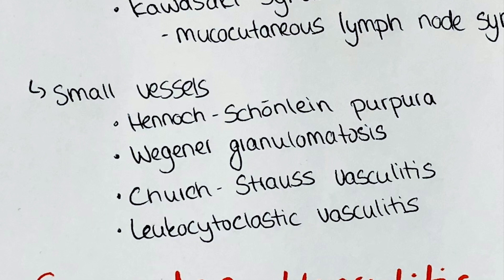Churg-Strauss vasculitis together with Wegener granulomatosis and microscopic polyangiitis are counted as primary systemic vasculitis and are all associated with anti-neutrophil cytoplasmic antibodies, short ANCA. Patients usually present with chronic diseases of the respiratory tract such as rhinitis, sinusitis or asthma, and nasal polyps are often found. Later in disease progression, high levels of eosinophils are found in the blood and tissues. All organ systems can be affected, leading to petechiae, diarrhea, tachyarrhythmia and many other symptoms.